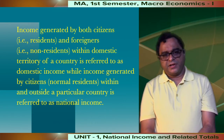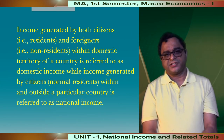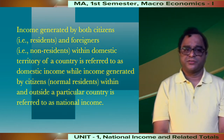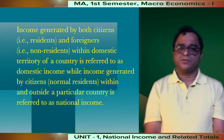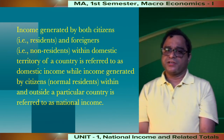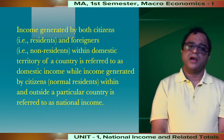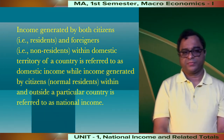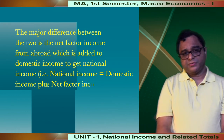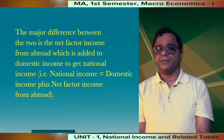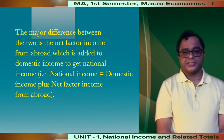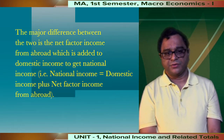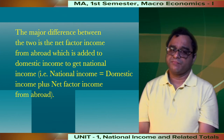Overall, income generated by both citizens, that is residents, and foreigners, that is non-residents, within the domestic territory of a country is referred to as domestic income. While income generated by citizens and normal residents within and outside a particular country is referred to as national income. The major difference between the two is net factor income from abroad, which is added to domestic income to get national income. That is: National Income = Domestic Income + Net Factor Income from Abroad.